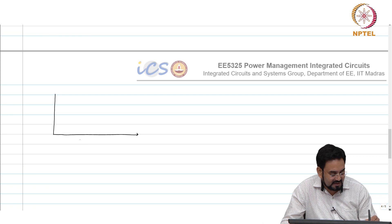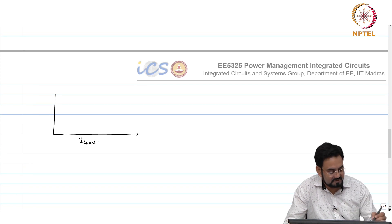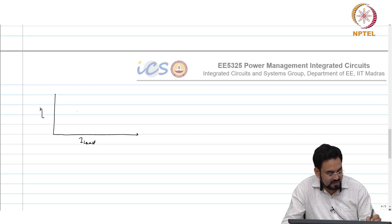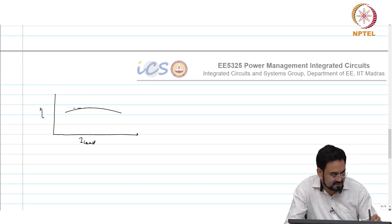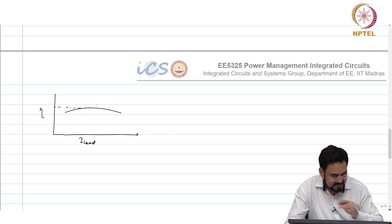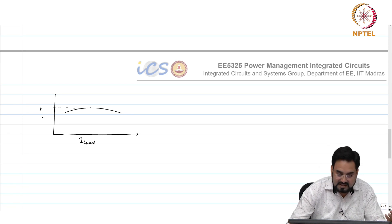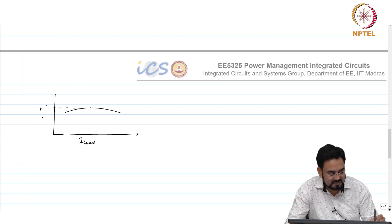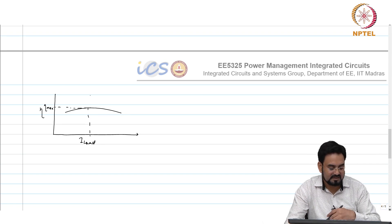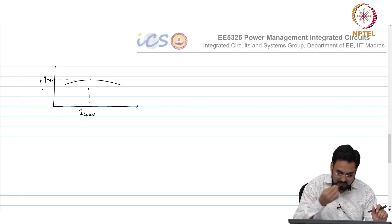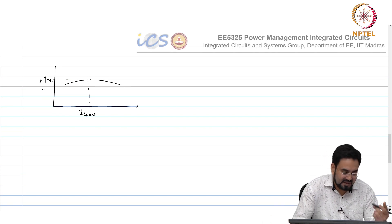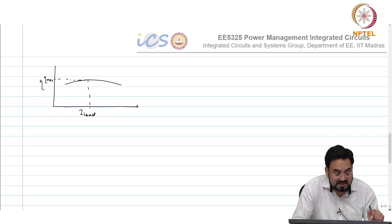The efficiency curve in most cases is measured against load current. For a switching regulator it peaks in some mid-range: at light load it rises, and as you keep increasing the load current, I²R losses increase, so efficiency keeps dropping. You get maximum efficiency at a certain load current, and at both light load and higher load it may reduce.